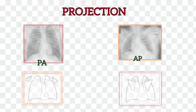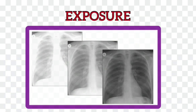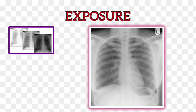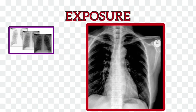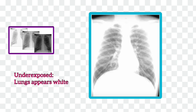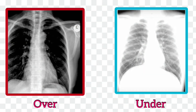P for projection we have already discussed. Now let's come to E, which stands for exposure. To check the degree of exposure, look at the visibility of vertebral bodies through the cardiac shadow. In a good exposure film, the vertebral bodies should only just be visible through the cardiac shadow. If they are too clearly visible, the film is overexposed; if they are not visible, the film is underexposed. In an overexposed film the lung appears darker, while in an underexposed film the lung fields will appear falsely white.